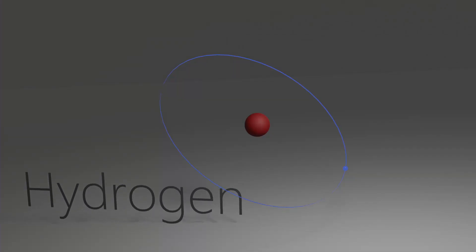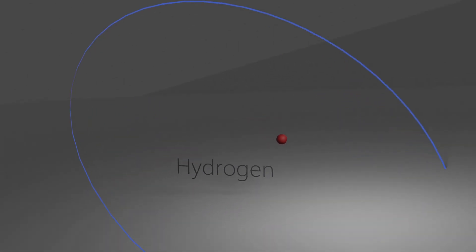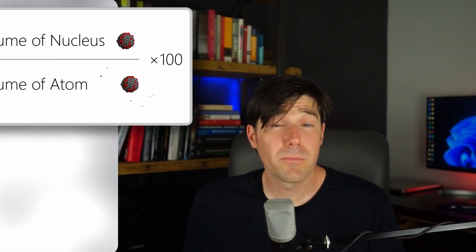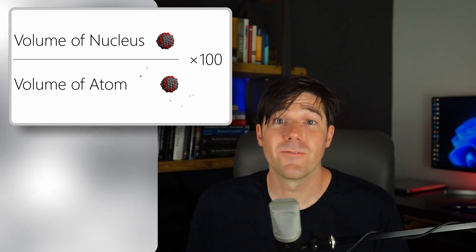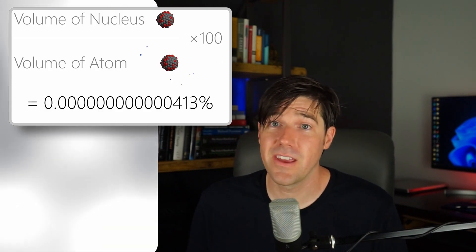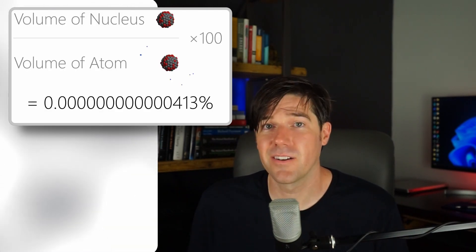For hydrogen, the nucleus has a diameter of only 1.7 femtometers. That's 10 to the minus 15 meters. The orbiting electron around the nucleus, on the other hand, extends to over 60,000 times this distance, bringing the total atomic diameter to 1.06 times 10 to the minus 10 meters, or 1.06 angstroms. For some perspective, this then means that the atomic nucleus only occupies around 4 times 10 to the minus 13 percent of the entire atomic volume.